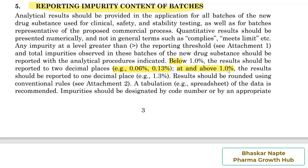At and above 1.0%, the result should be reported to one decimal place — for example, 1.3%. So only one digit after a decimal is required when the impurity is at or above 1.0%. When the impurity content is less than 1.0%, you must report the result up to two digits after the decimal point — examples 0.06% and 0.13% are given in the guideline.